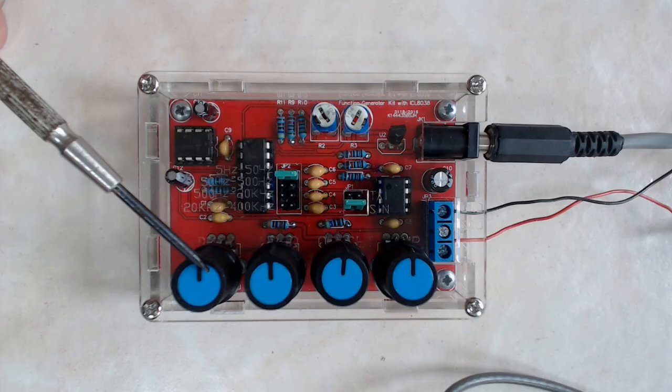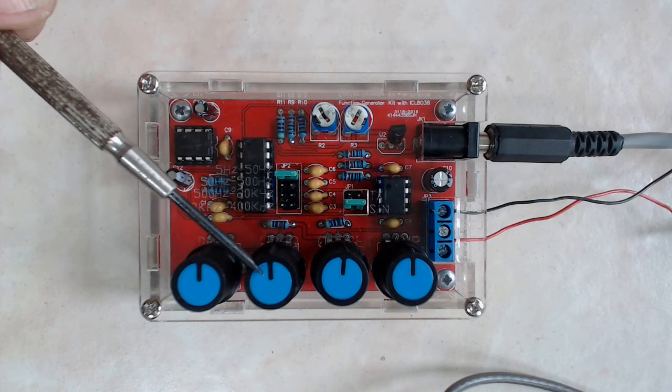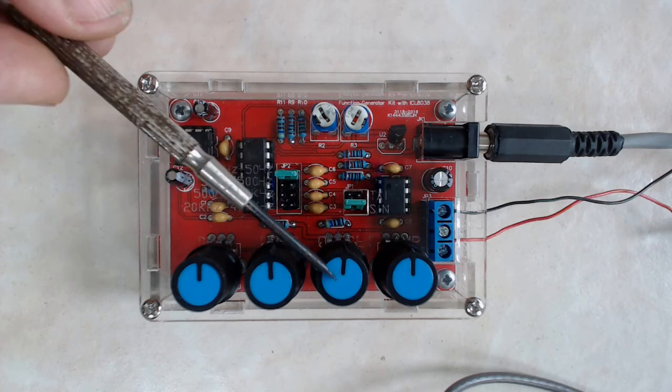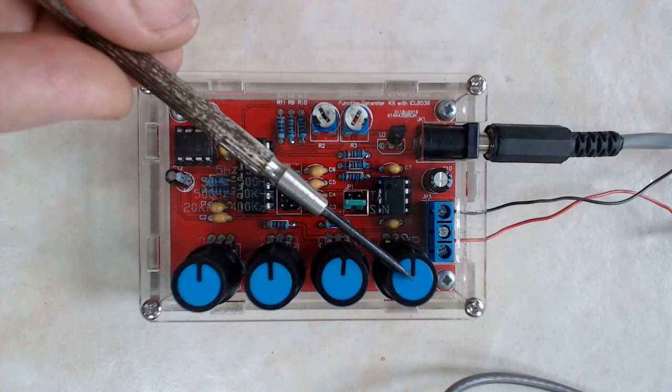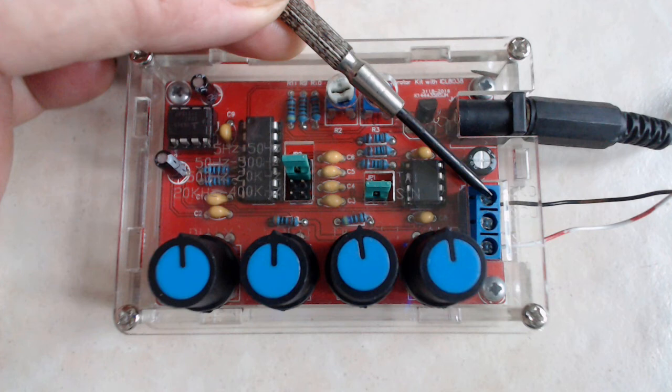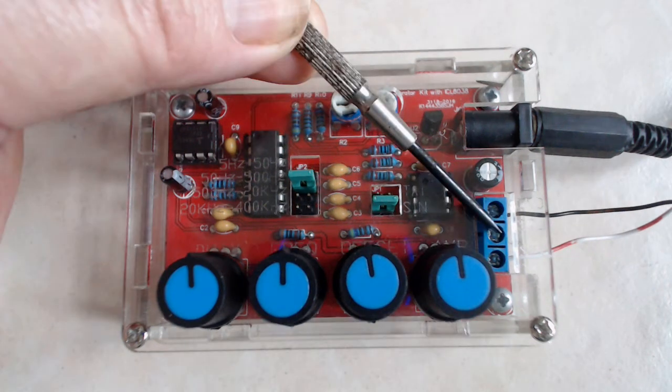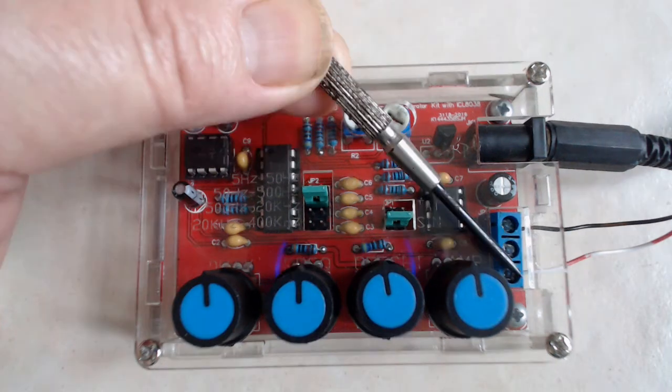We have four control potentiometers on the bottom. The one on the left is a duty cycle control. Next one to the right being the frequency potentiometer. Then we have the zero offset potentiometer. Followed lastly with the amplitude potentiometer. There are three output wire connections. The one on the top is the ground. Next one down is the square wave output. And followed lastly with the triangular wave or sine wave output.